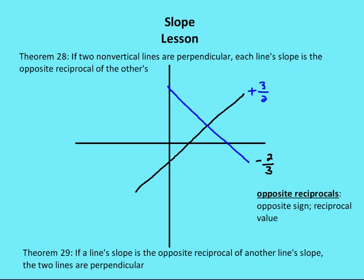Now what about perpendicular lines? If I have two non-vertical lines that are perpendicular, each line's slope is the opposite reciprocal of the other. So I have two lines that are perpendicular to each other — the black line has a slope of three-halves, which means the slope of the blue line is going to be the opposite reciprocal, or negative two-thirds. There are two steps: find the opposite sign of the slope, then find the reciprocal of that slope.